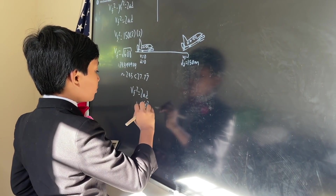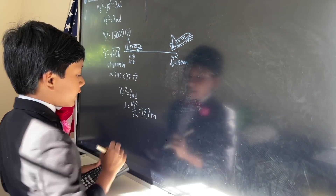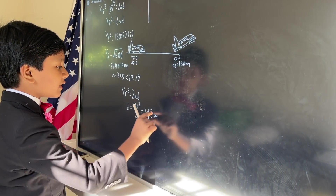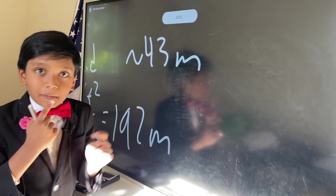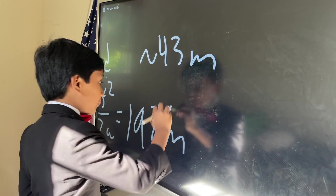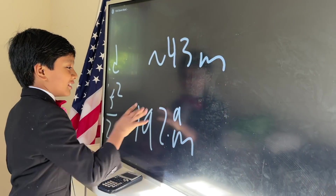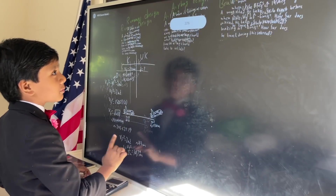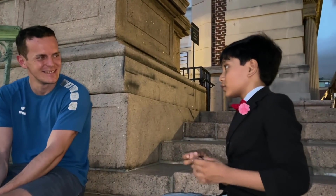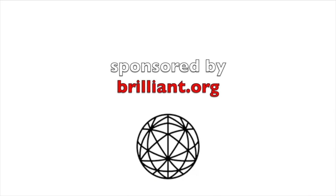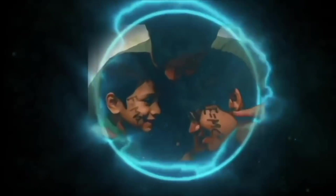That gives us approximately 192 meters, so the runway needs to be extended by roughly 43 meters. Going back to verify against the Columbia student's answer of 193 meters — accounting for the decimal — our answer checks out. Drive to Bari Science Lab to fall in love with math and science, especially programming.